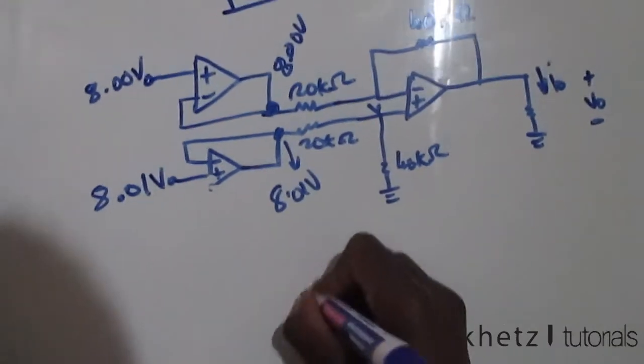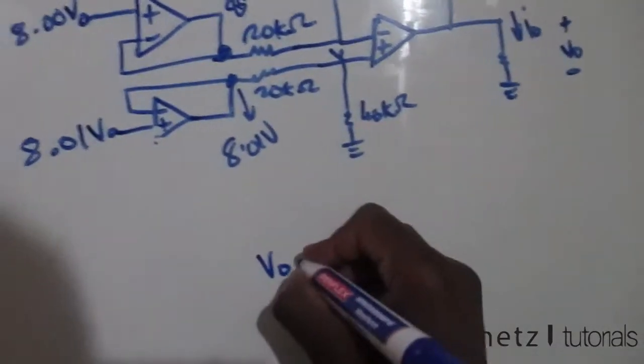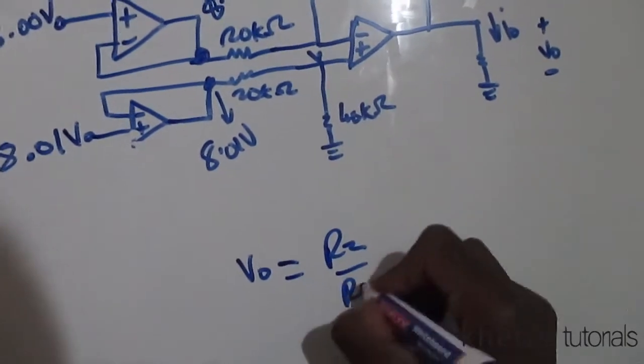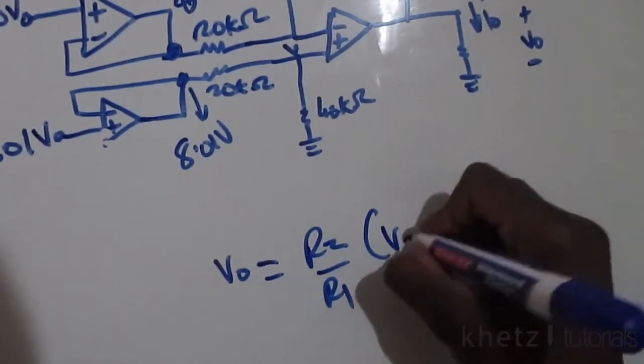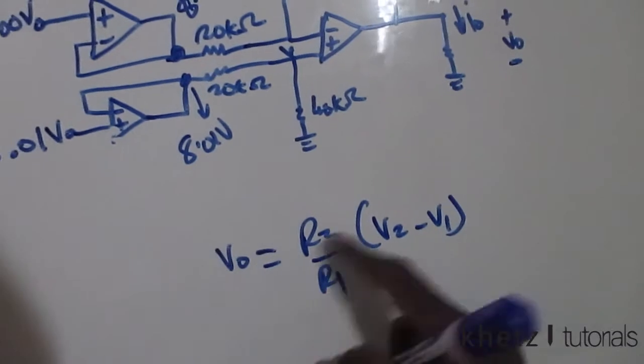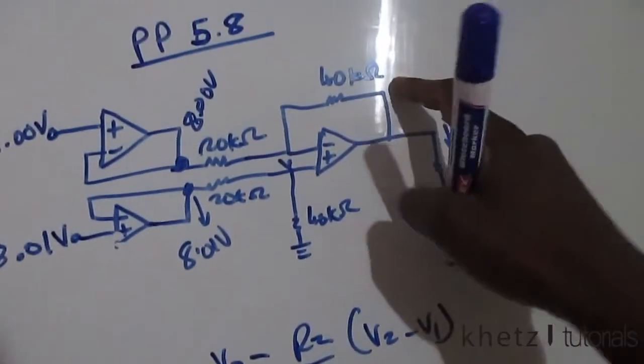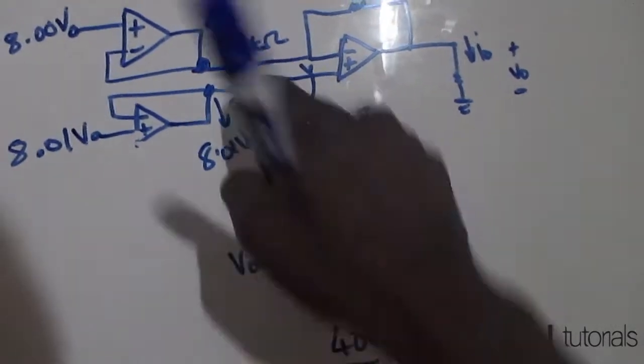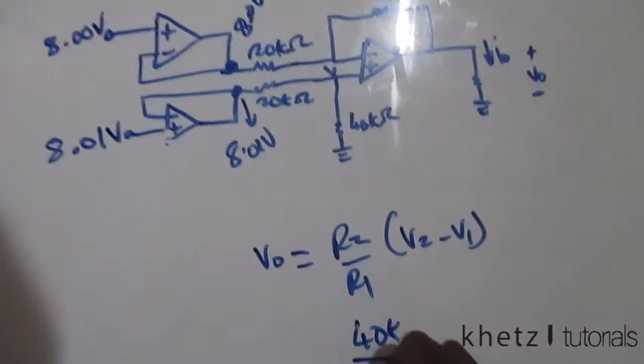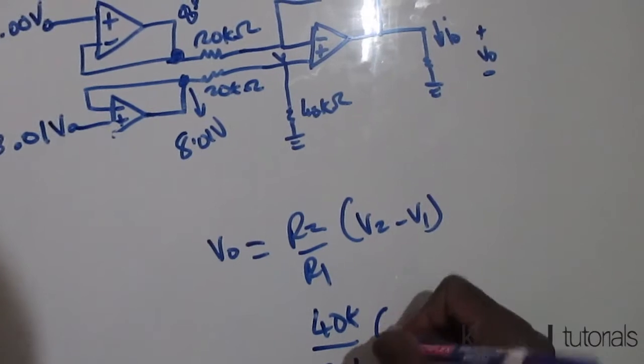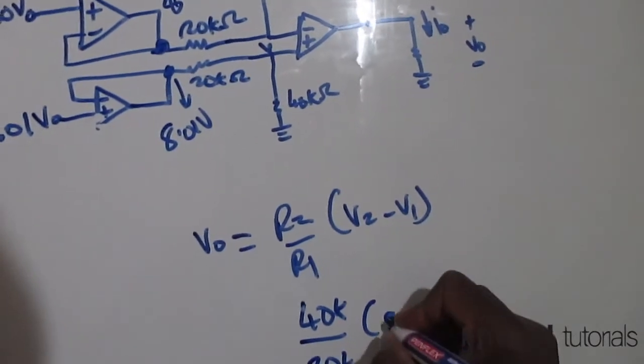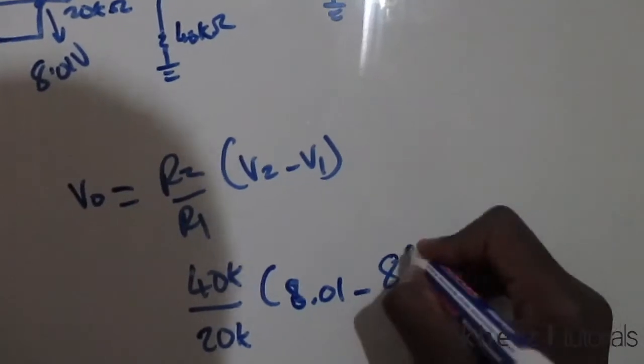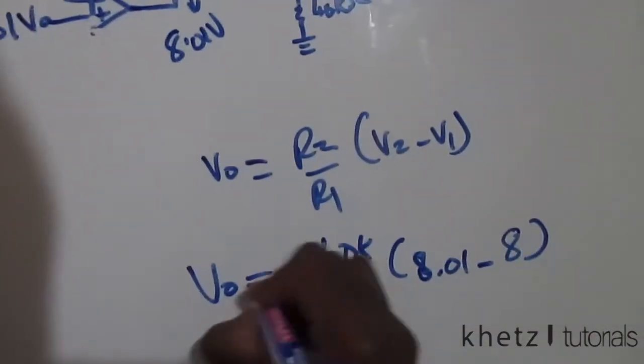Vo, the output, equals R2 divided by R1 multiplied by (V2 - V1). Substituting these values, this R2 is the feedback resistor of value 40k, and this R1 is this resistor of 20k, multiply by 8.01 subtract 8 volts.